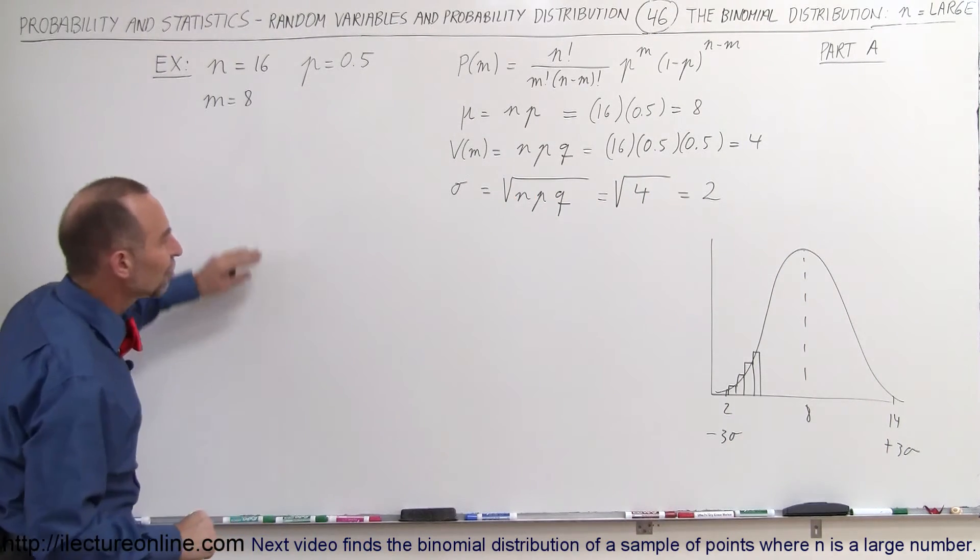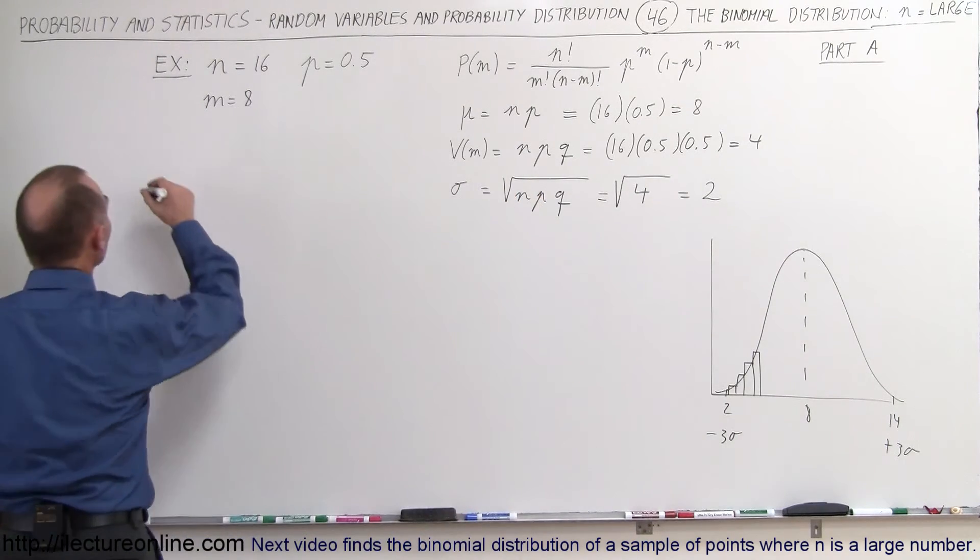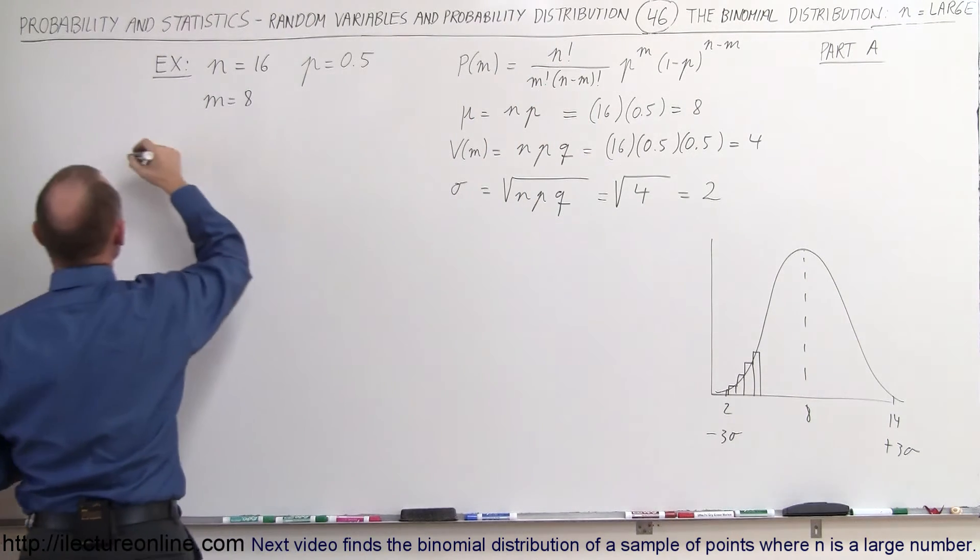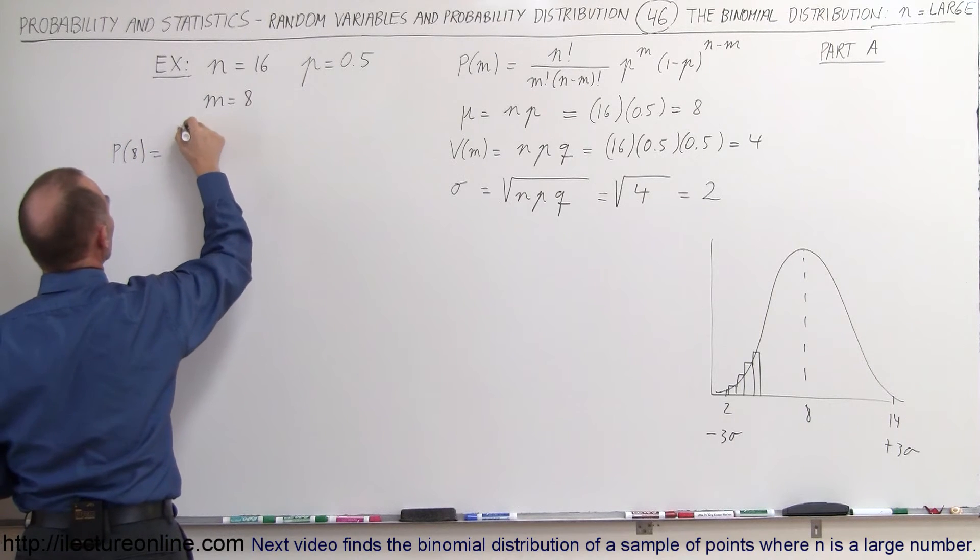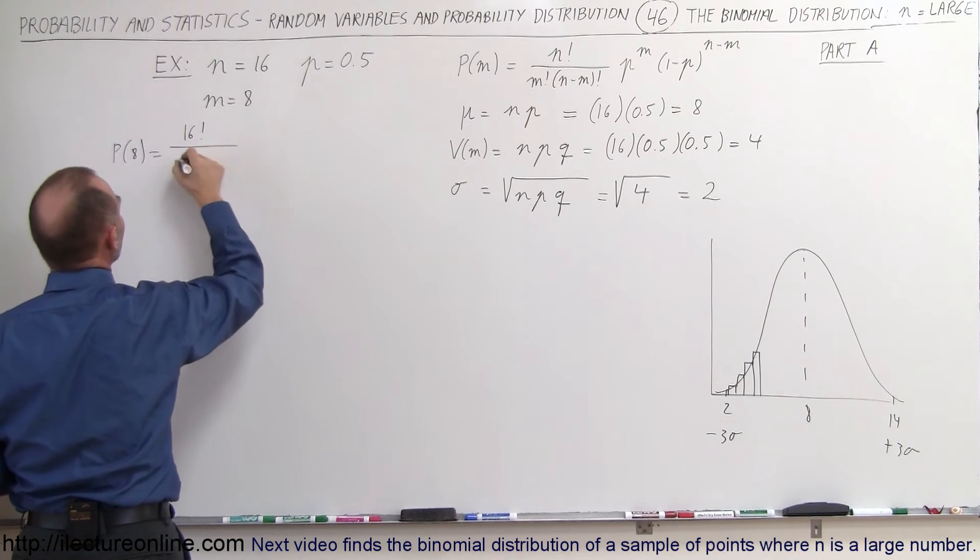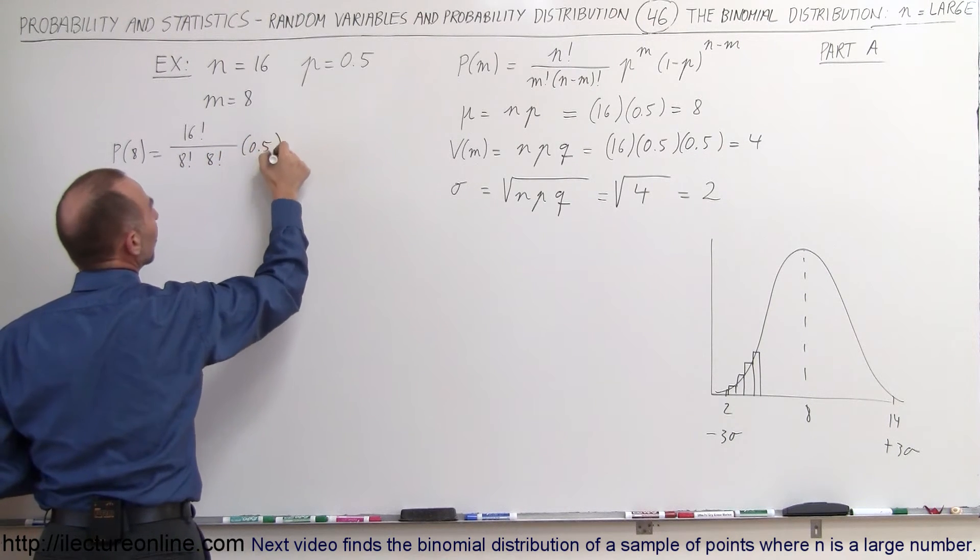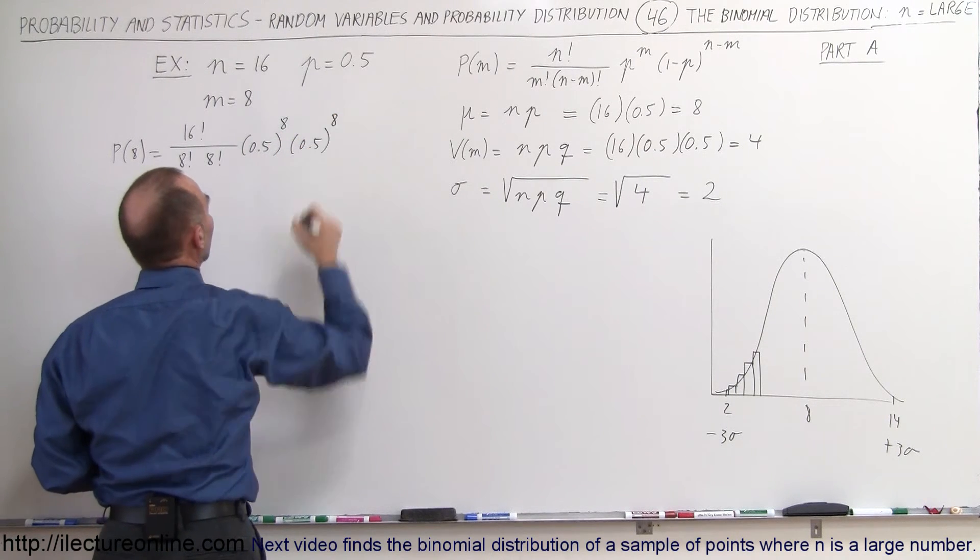Now let's find the probability of 8 successes. The probability of 8 is equal to n factorial, 16 factorial, divided by 8 factorial, divided by 8 factorial, times the probability, 0.5 to the 8 power and 0.5 to the 8 power.